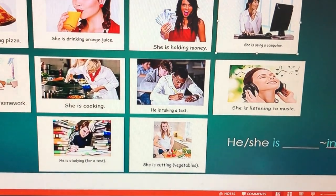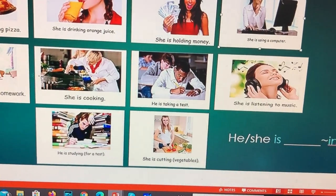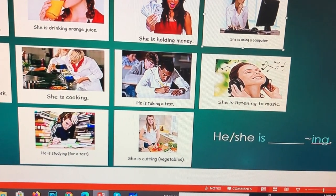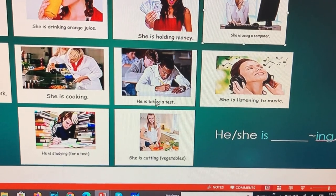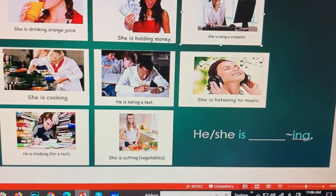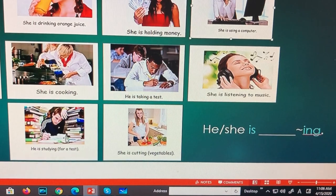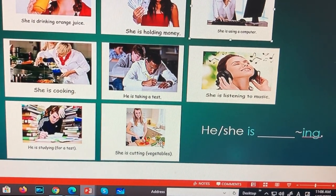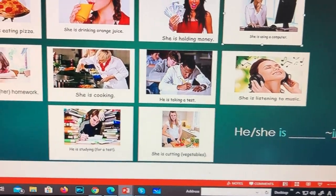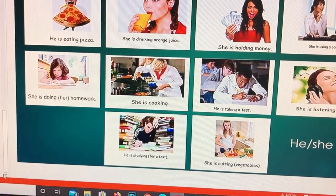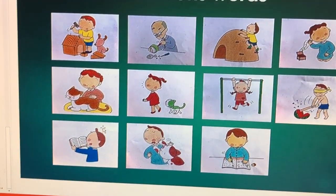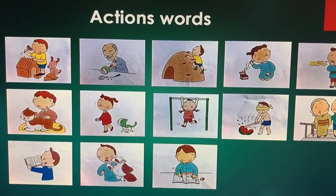He is eating pizza. She's drinking orange juice. She's holding money. She is using a computer. She's doing her homework. She is cooking. He is taking a test. She is listening to music. He is studying for a test. She is cutting vegetables. And the last slide, our action words.